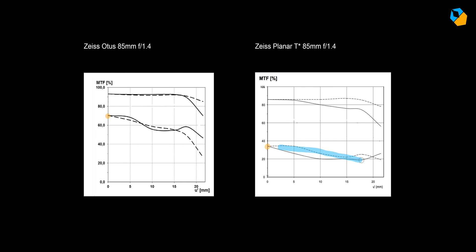However, the planar holds its resolution consistently, while the Otis drops off more steeply. At the corner, the Otis is about 35% for the solid line, while for the dotted lines, it's much worse at about 25%. The planar stops at 20%. There's no doubt which is the better resolving lens here.